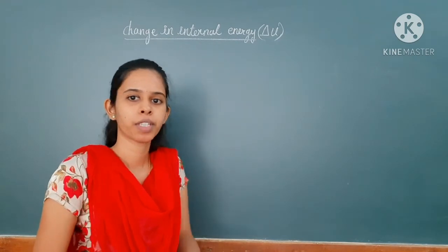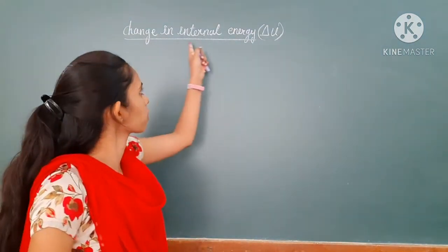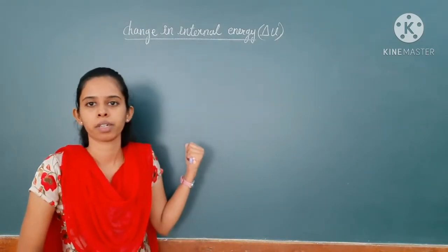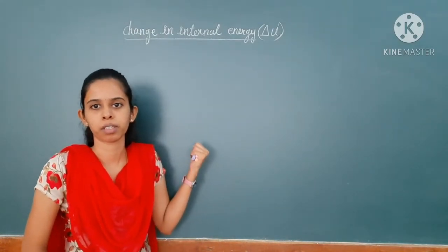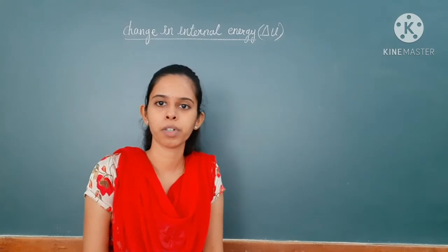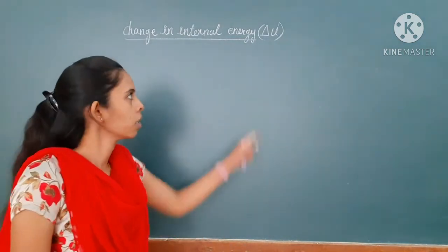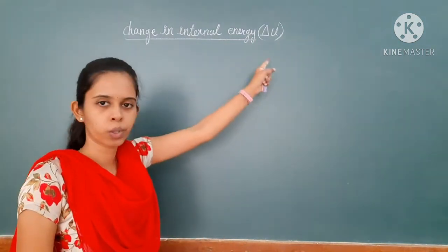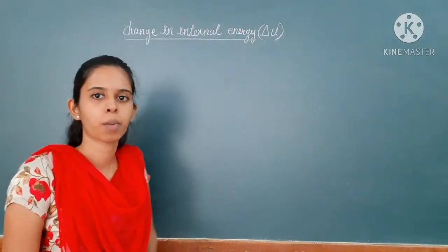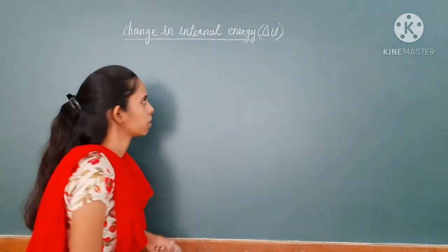Before this, we have already seen about change in internal energy. We have already seen in the first law of thermodynamics. So the first law of thermodynamics gives you the relation between delta U, work done, and the amount of heat which is added to the system.